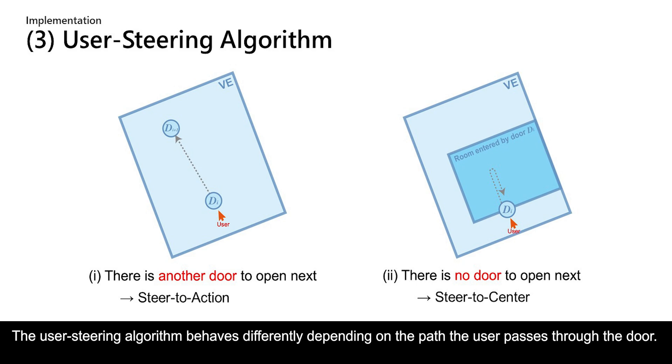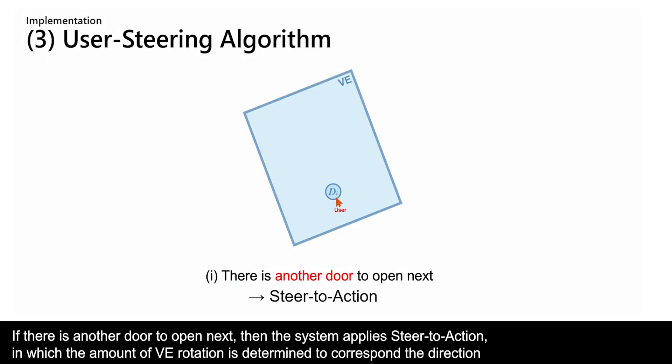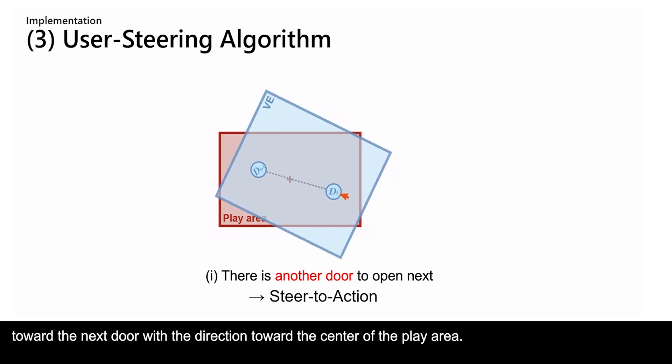The user steering algorithm behaves differently depending on the path the user passes through the door. If there is another door to open next, then the system applies steer-to-action, in which the amount of virtual environment rotation is determined to correspond the direction toward the next door with the direction toward the center of the play area.